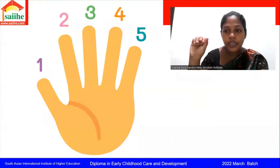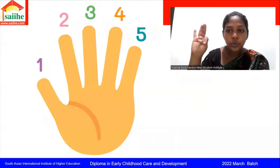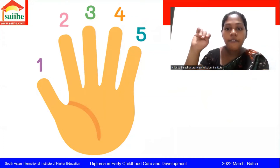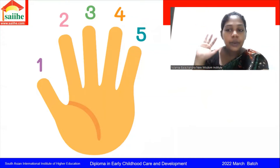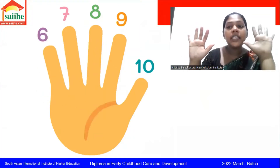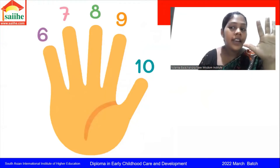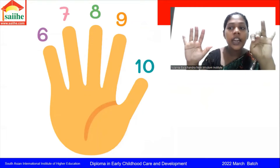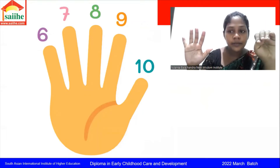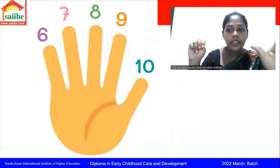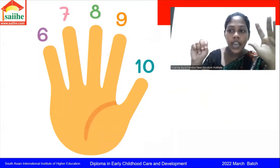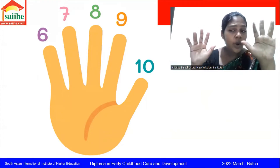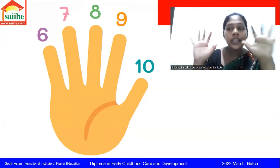Let's count our fingers: one, two, three, four, five. We have five fingers in our hand. Now let's take the other hand and count: six, seven, eight, nine, ten. First we count from one to five and then six, seven, eight, nine and ten. Tell me, how many fingers do we have? Ten!